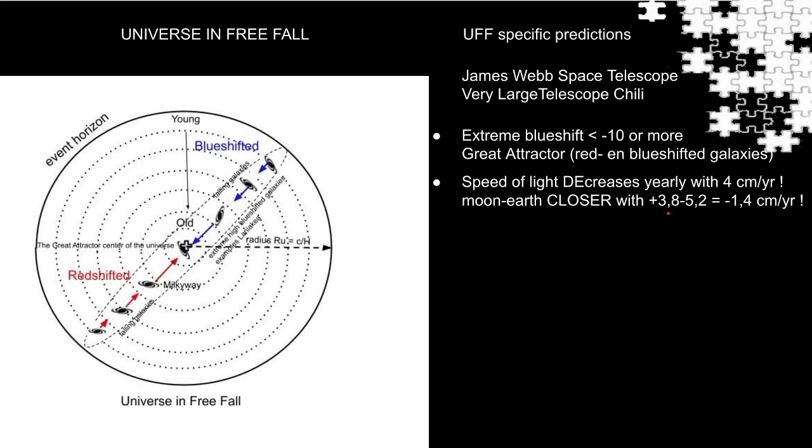So in reality a plus 5.2 cm value means 0 cm drift. Just subtract 5.2 cm as a systematic error per year and then you have measured the correct value. Now back to the plus 3.8 cm drift of the Moon. If we subtract for the error then we have a plus 3.8 minus 5.2 that is minus 1.4 cm per year. So this means the Moon falls slowly to the Earth with 1.4 cm per year.